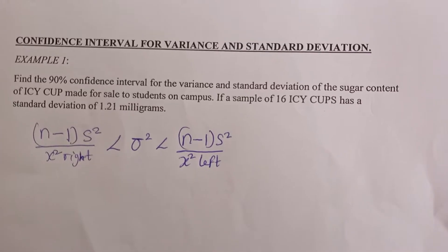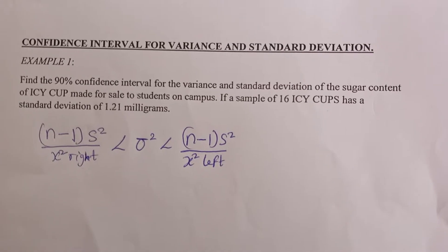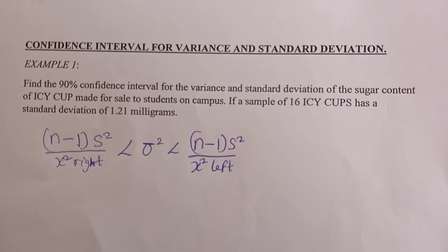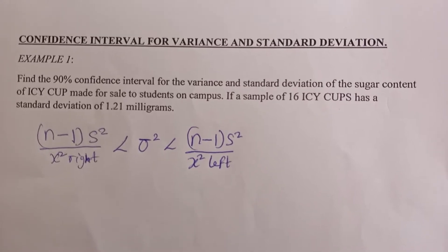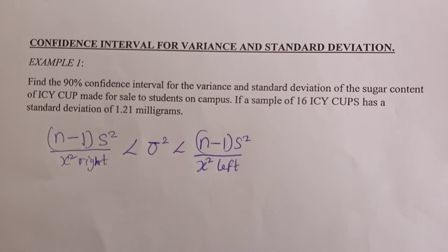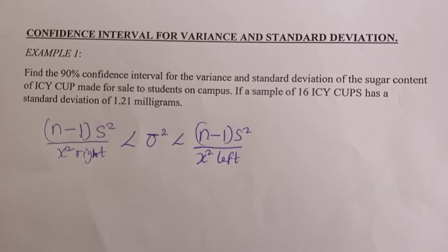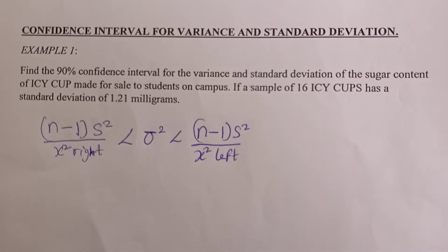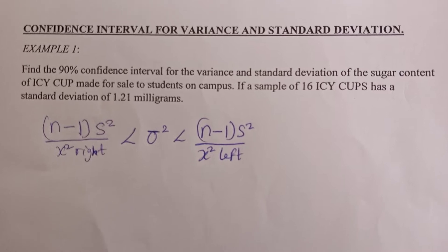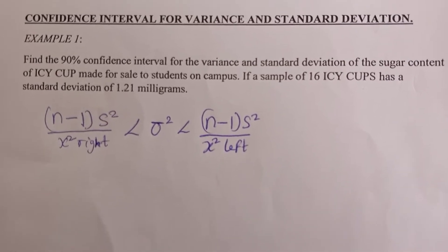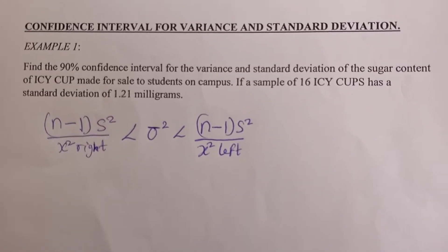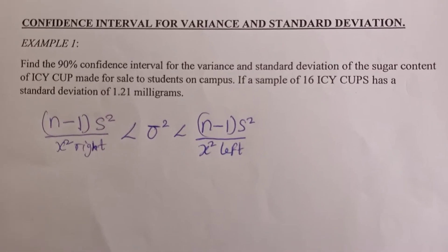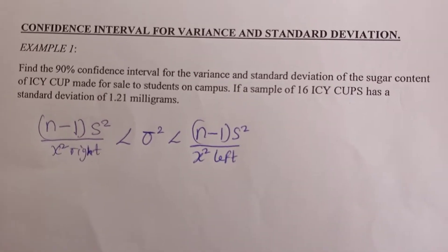Welcome. In this lesson we are going to look at how to estimate a confidence interval for variance and standard deviation. In basic math, we know that whenever you have a variance you can convert it to a standard deviation by taking the square root of it, and when you have a standard deviation you can convert it to a variance by squaring it.